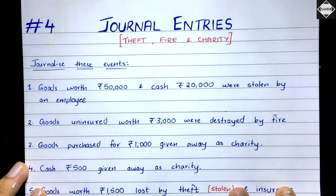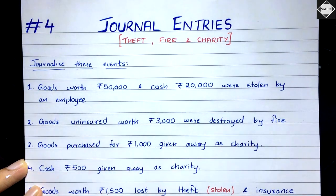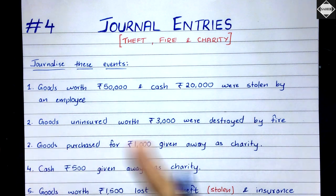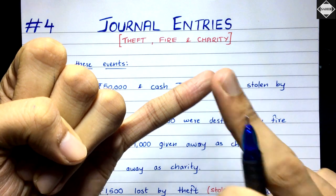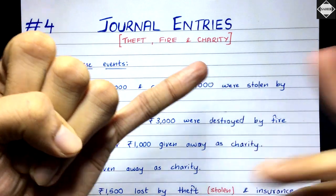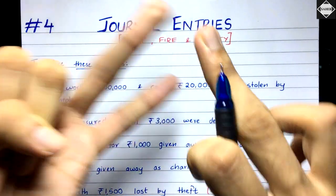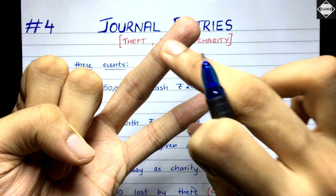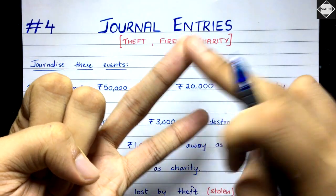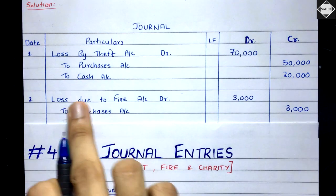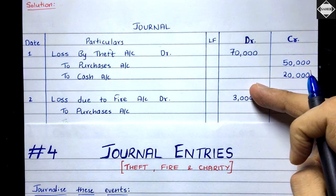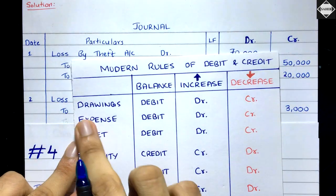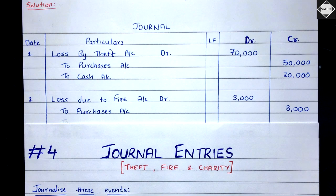Now the second transaction: goods uninsured worth 3,000 were destroyed by fire. The same concept — goods have been destroyed, so a loss has been incurred. We have to record that 3,000 loss and the goods are no more in the business — they are damaged and cannot be sold. Two accounts are involved: loss and goods (purchases account). The entry is: Loss Due to Fire Account debit 3,000; to Purchases Account 3,000. The expense account decreases, so we credit it.